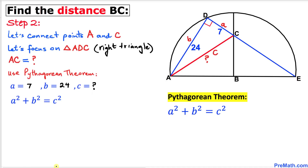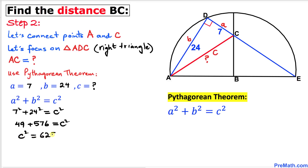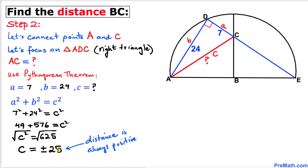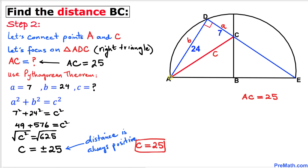Filling in the values where a = 7 and b = 24, we get 7² + 24² = c², which gives us 49 + 576 = c², so c² = 625. Taking the square root of both sides, c = ±25. Since distance is always positive, c = 25. Therefore AC = 25 units.